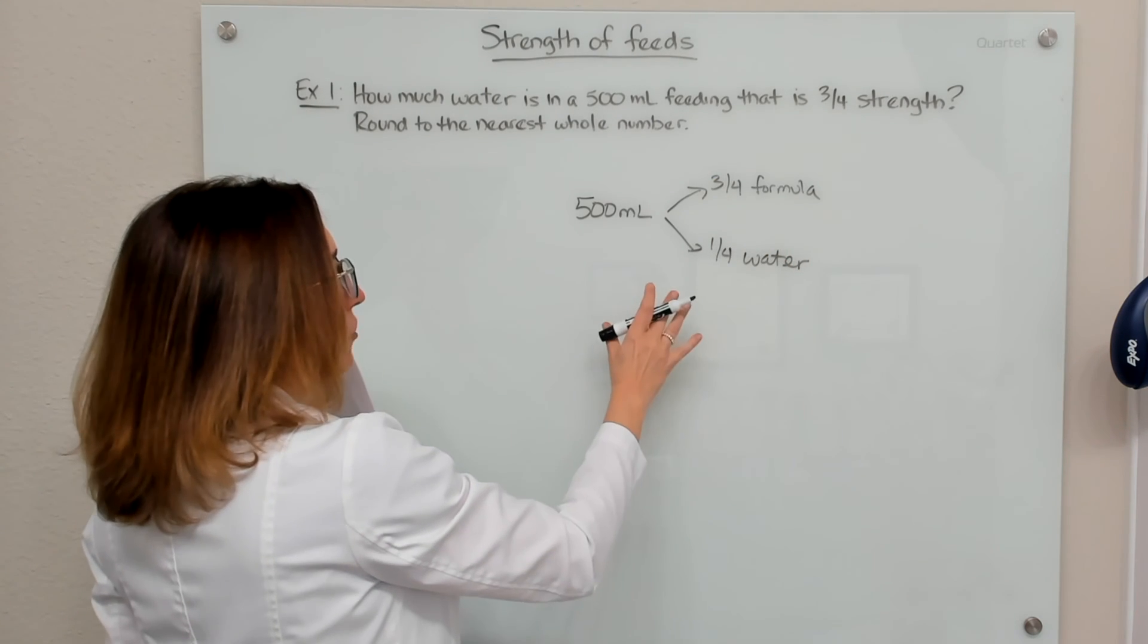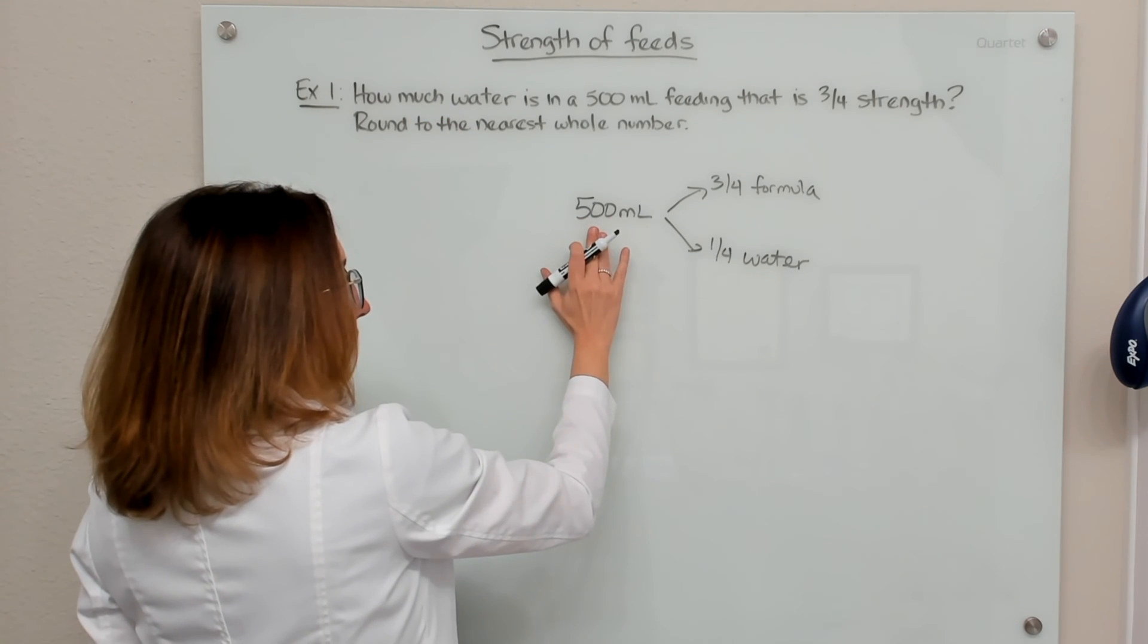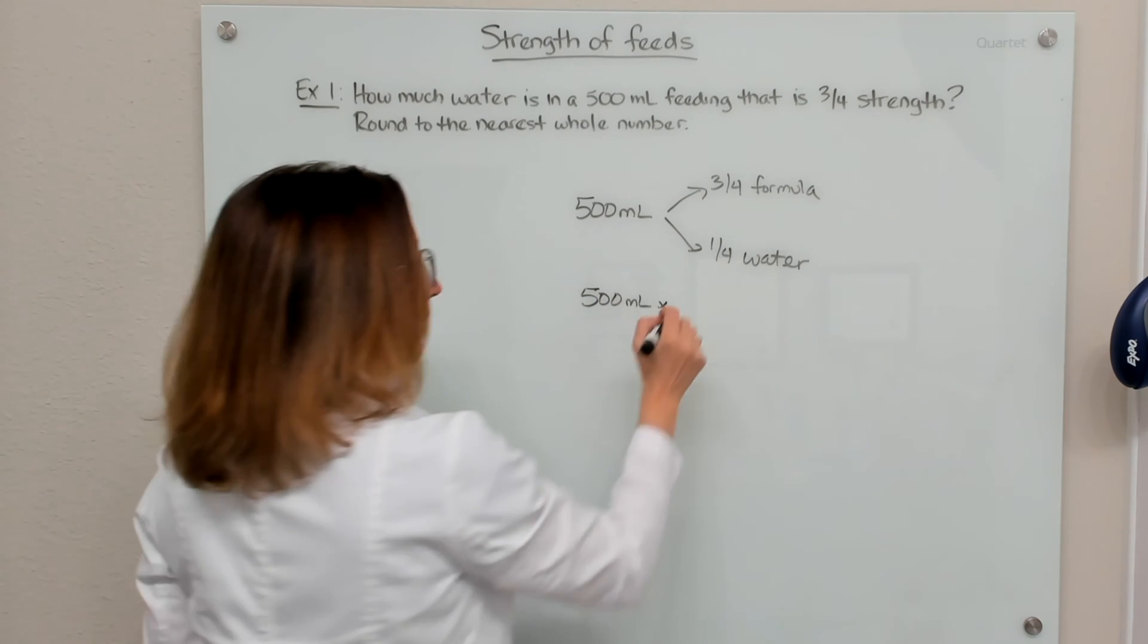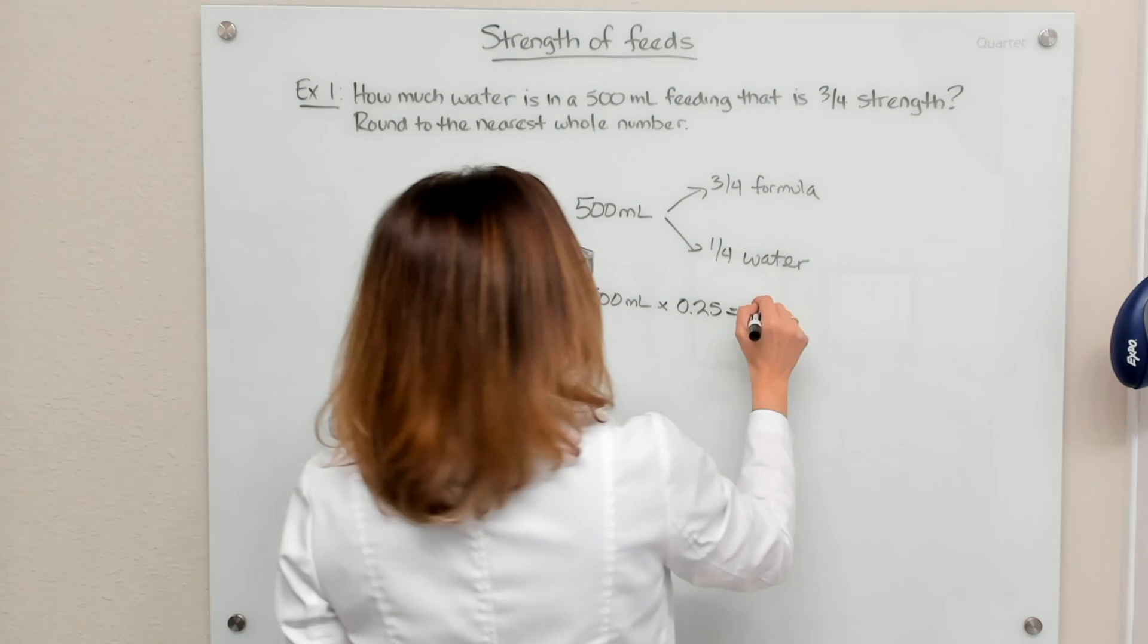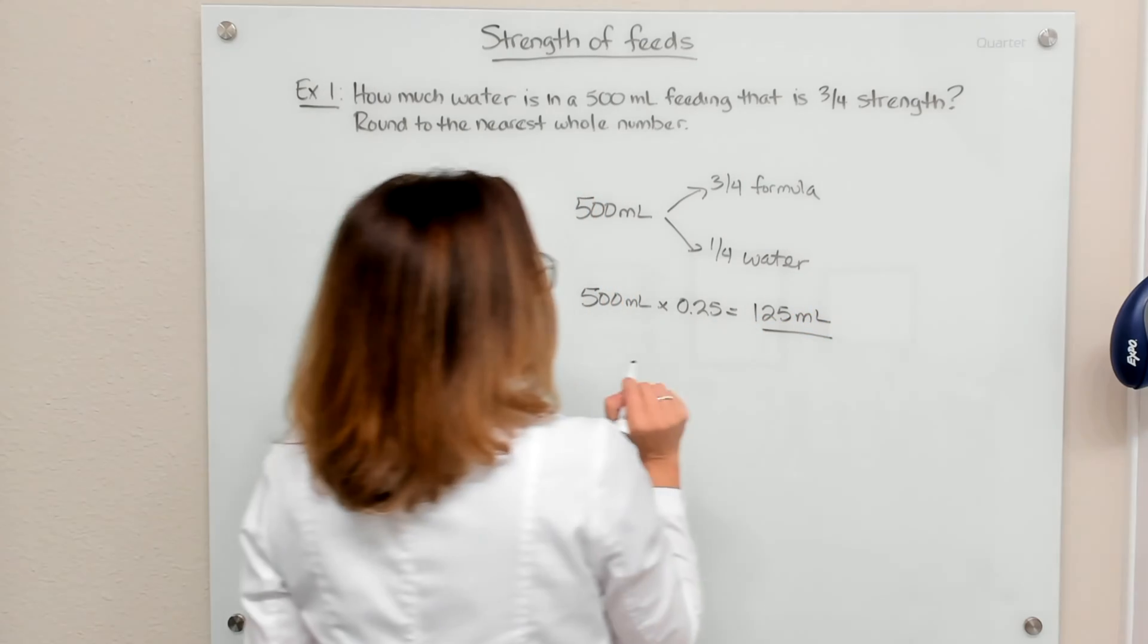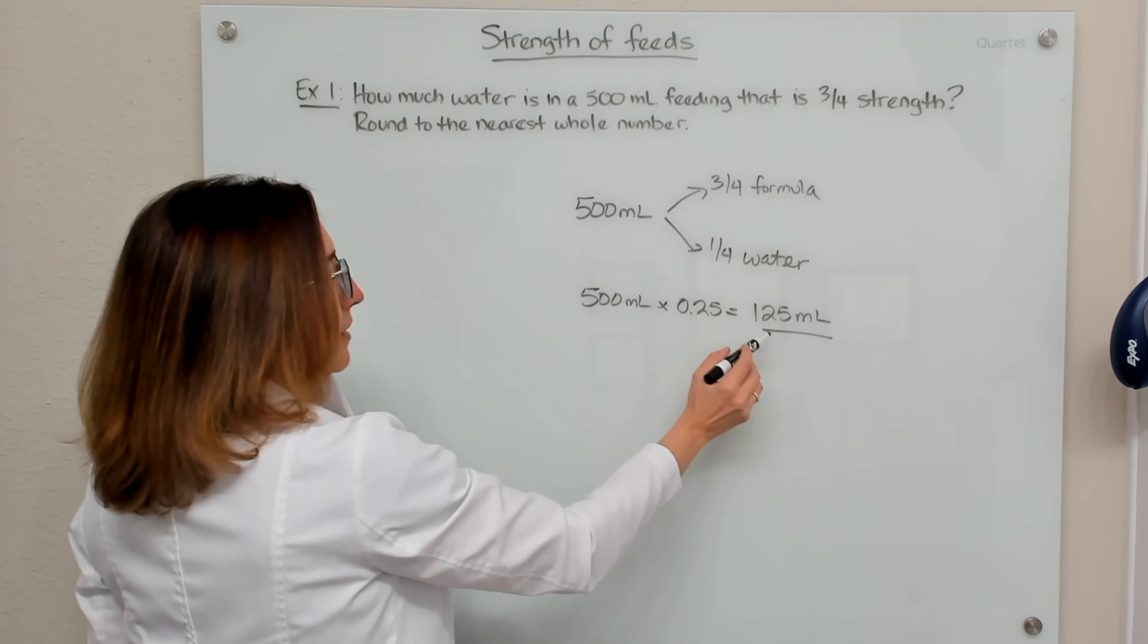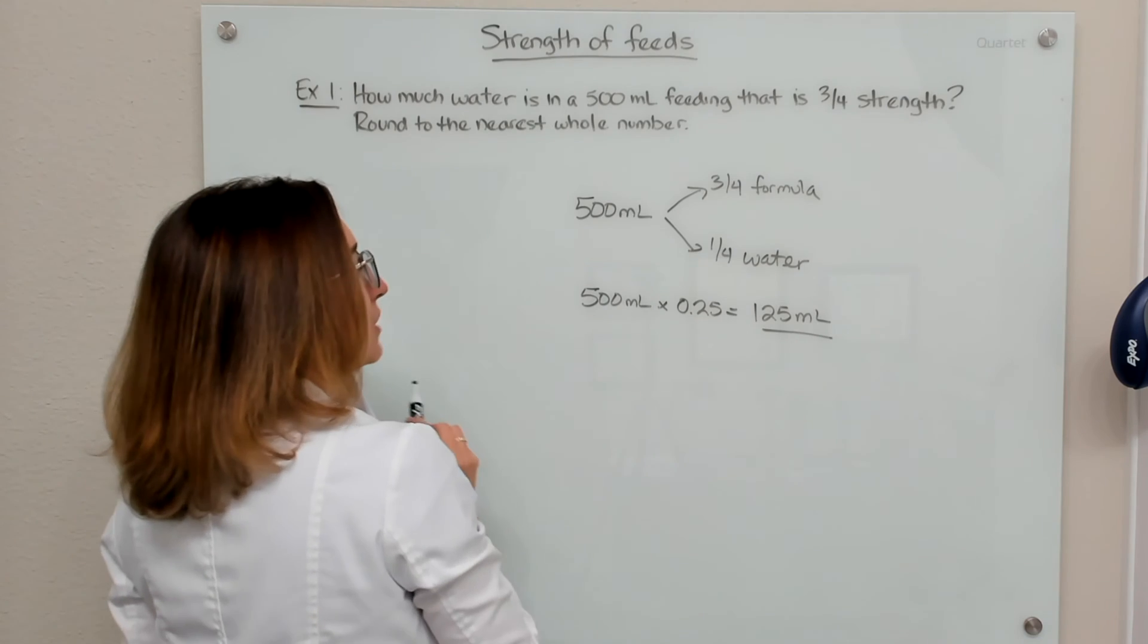So in order to calculate the amount of water that is in this 500 ml feeding, we just need to take 500 ml and multiply times a quarter or 0.25. And if we do this math, we end up with 125 ml. That is how much water is in this 500 ml feeding that is three quarters strength. And this is rounded to the nearest whole number already, so we are good to go.